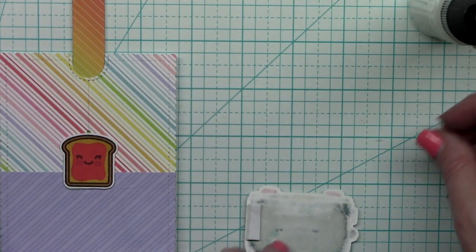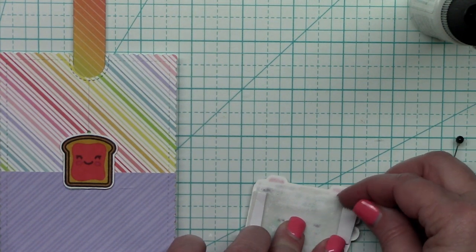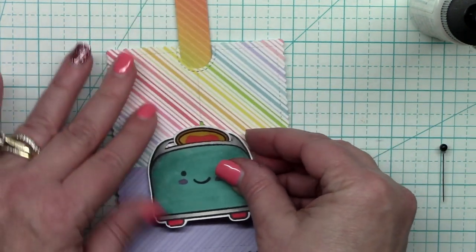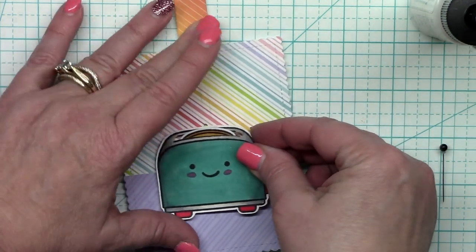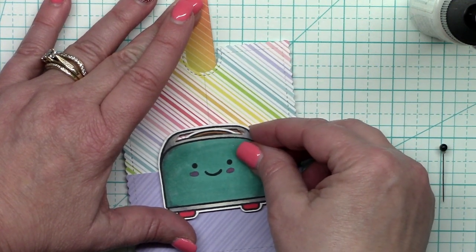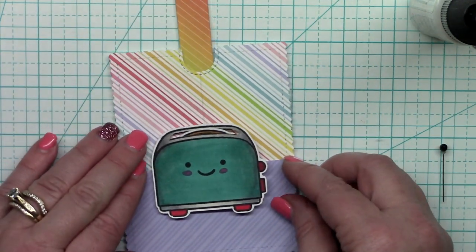Now it's time to apply the toaster. You do need to put this on some foam tape and be very careful to leave enough room in the middle for the toast to be free enough to move up and down. So just some narrow pieces of foam tape is what you need on each side of your toaster.